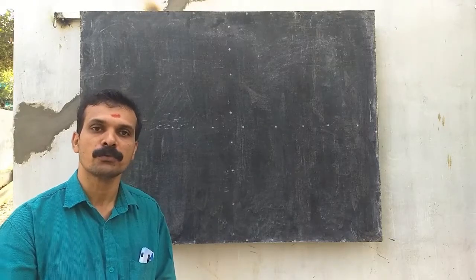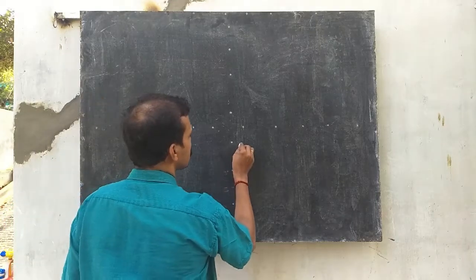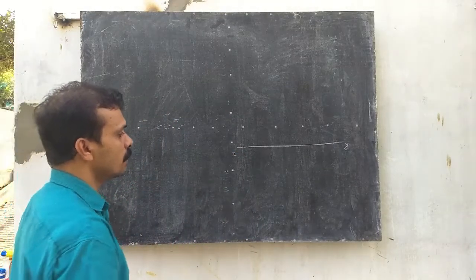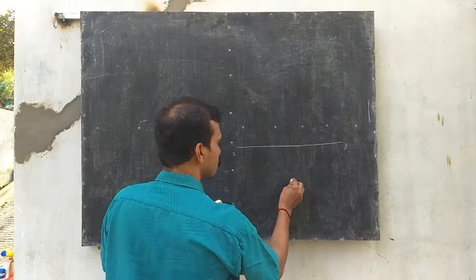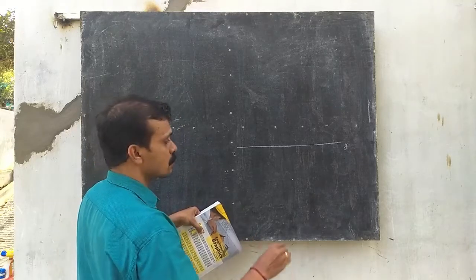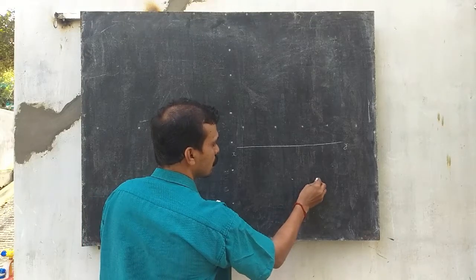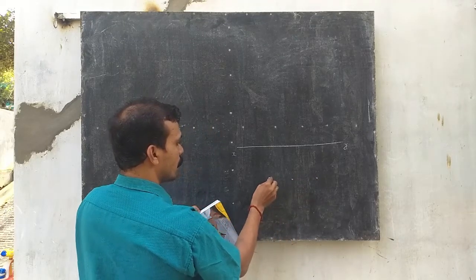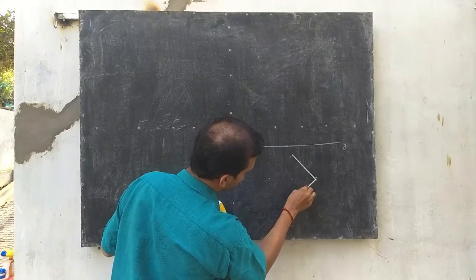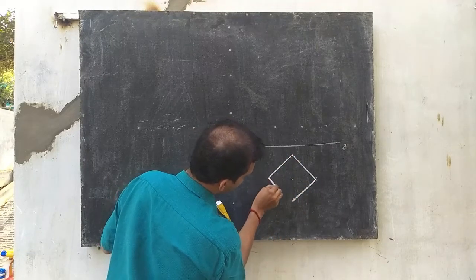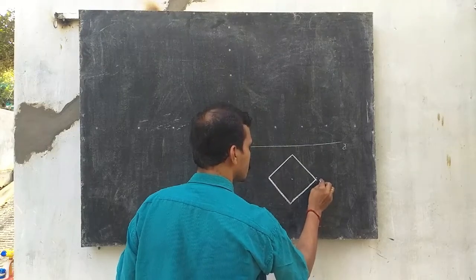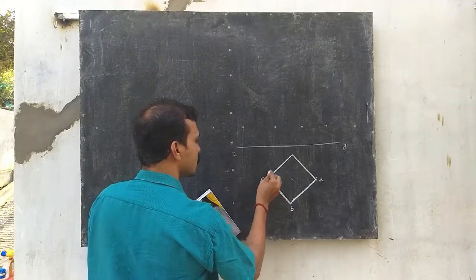We start with the top view of the square prism. This is the XY line. To construct the diamond, select a center point. The base side is 30 mm, so the diagonal is 30√2, and we take 30√2/2 in all four directions from the center to get the four corner points. Now we have completed the diamond — this is the top view of the square prism.